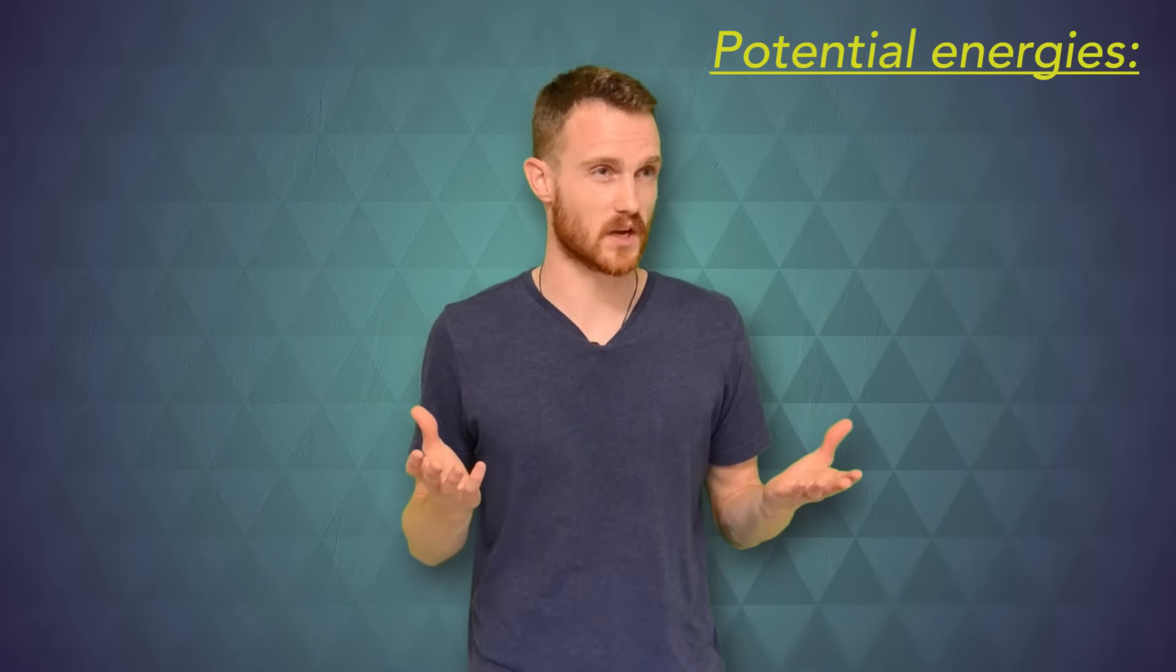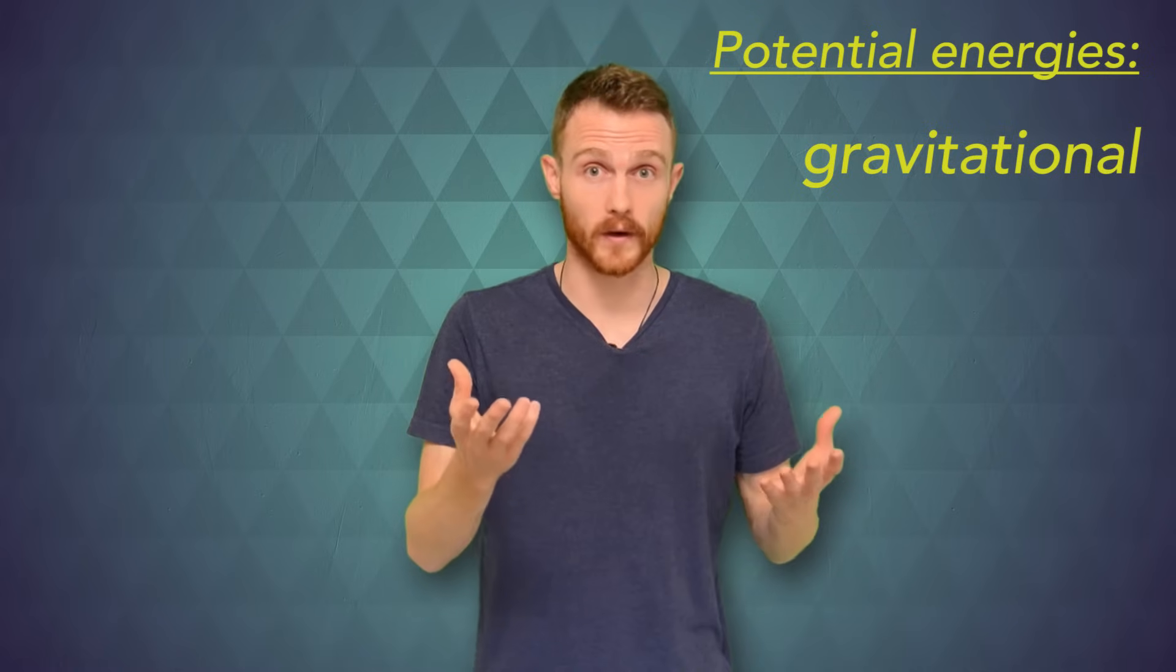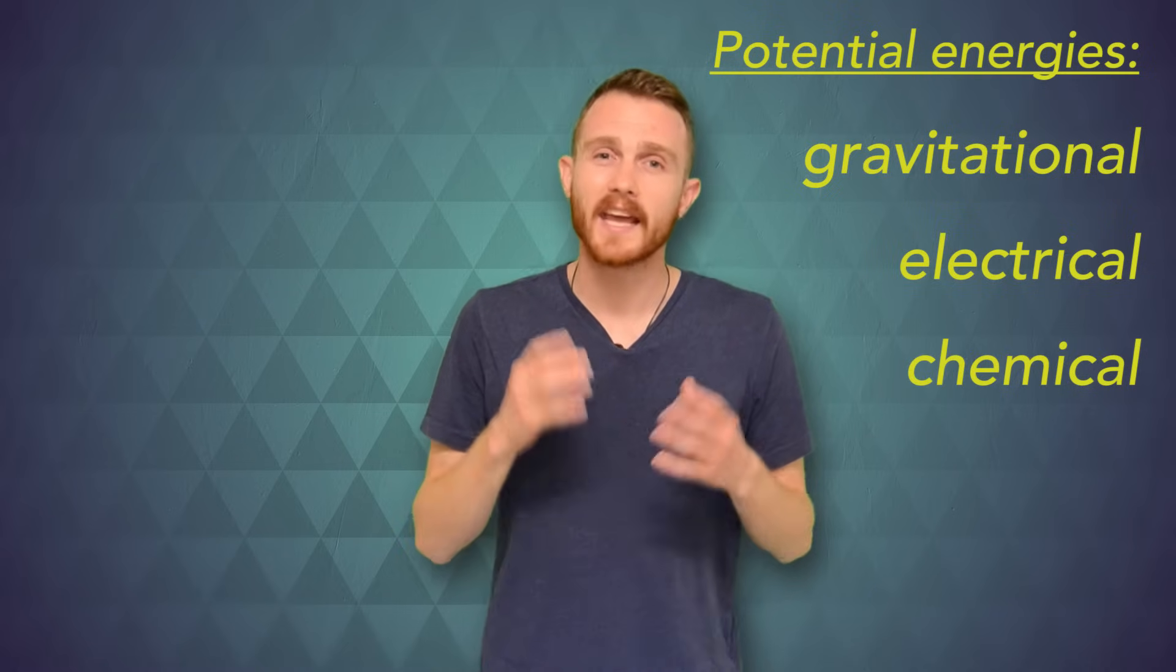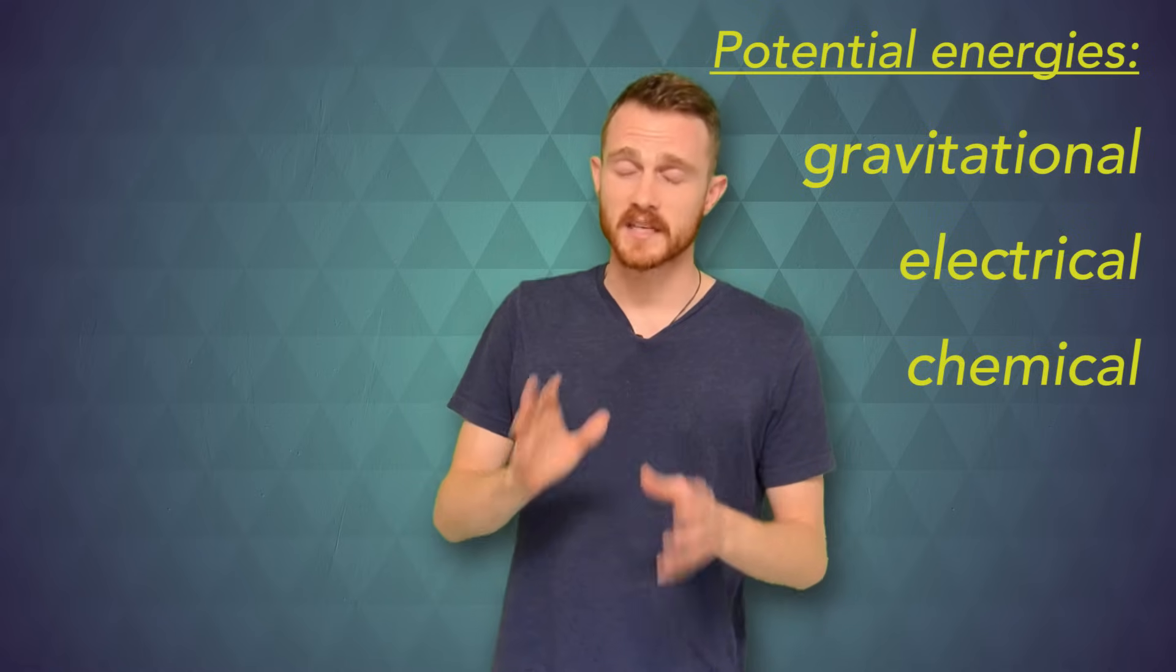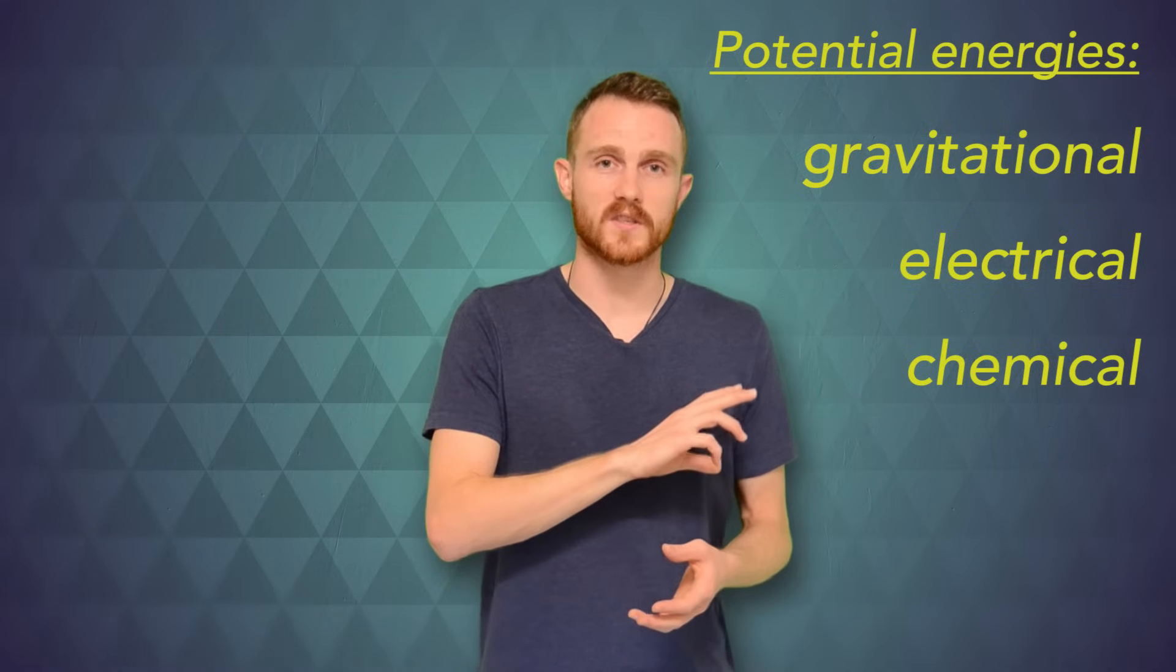So let's review. Energy is either doing stuff or having the potential to do stuff. We've discussed gravitational potential energy, like in the swing, electrical potential energy, like in power lines, and chemical potential energy, like in coal or the food that we eat. There are other kinds of potential energy, like elastic and nuclear, but they're quite similar to these ones.